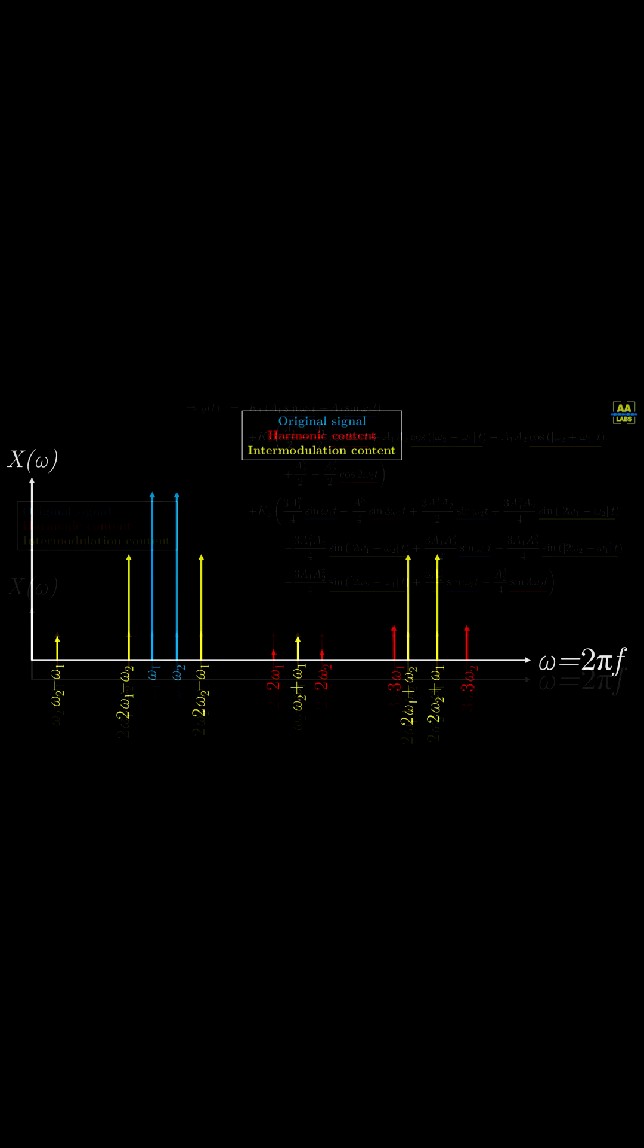Now, these frequency components will be at different amplitudes. The amount of harmonic and intermodulation content depends on both the amplifier's characteristic curve and the amplitudes of the input. Put more simply, the distortion products will increase in magnitude the further you overdrive the amplifier.